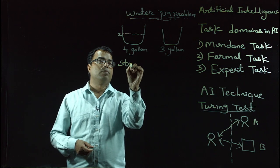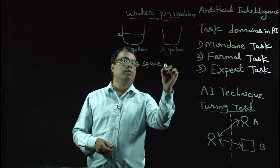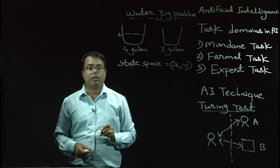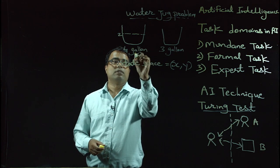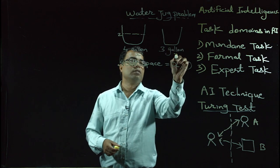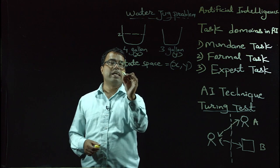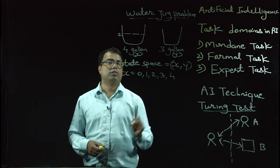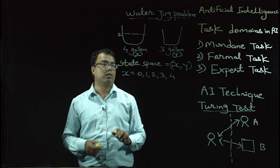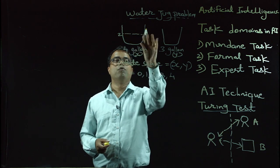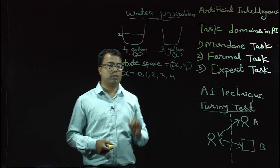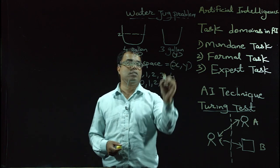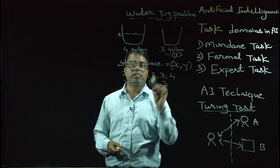The state space for this problem will be a set of ordered pairs (x, y), where x represents the number of gallons of water in the 4-gallon jug and y represents the number of gallons in the 3-gallon jug. Hence, x will take values from 0 to 4 — where 0 means the 4-gallon jug is empty and 4 means it is full. Similarly, y will take values from 0 to 3, since the capacity of that jug is 3 gallons.